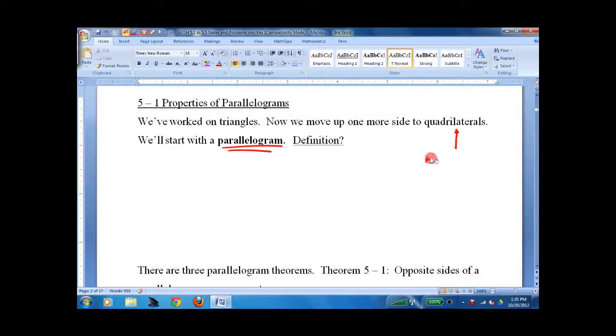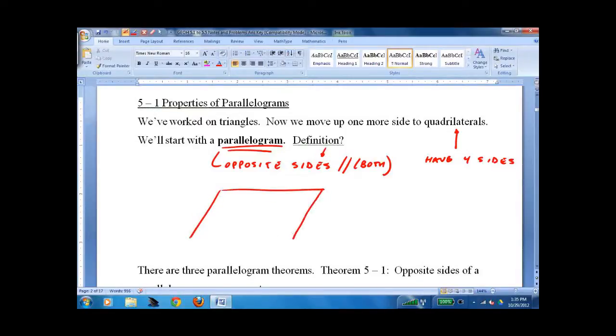Quadrilaterals have four sides. Parallelograms have opposite sides parallel, and that's both sides. That's the definition. So if you were to draw it, it would look something like that.